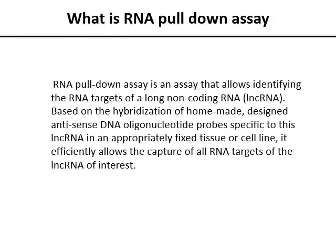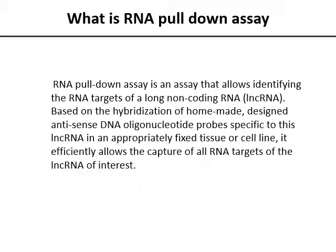Before we talk about how we can identify the RNA targets of a non-coding RNA, we need to know what the RNA pulldown assay is. Basically, it is an assay that allows identifying the RNA targets of a long non-coding RNA, based on the hybridization of homemade antisense DNA oligonucleotide probes specific to that long non-coding RNA in an appropriately fixed tissue or cell line. It efficiently allows the capture of all RNA targets of the non-coding RNA of interest.